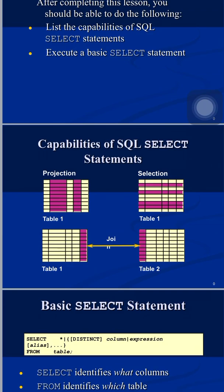Sometimes we want to fetch data from multiple tables. Suppose we have table 1 and table 2 and we want to fetch data from both — in that case we use a join operation. So projection focuses on columns, selection focuses on rows, and join combines data from multiple tables.